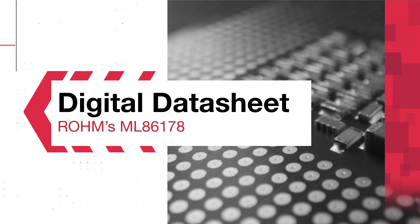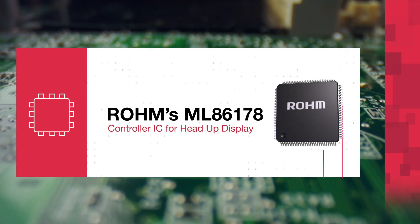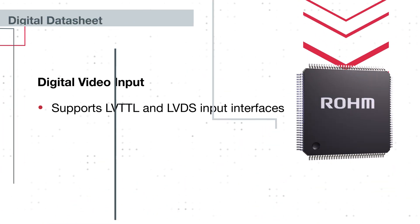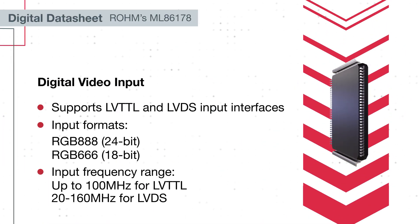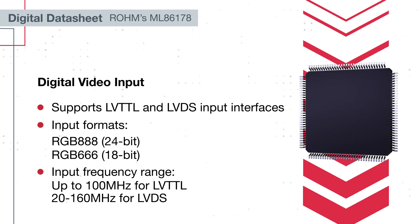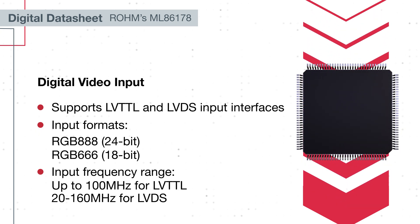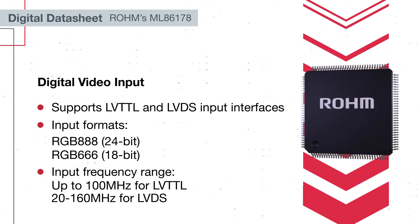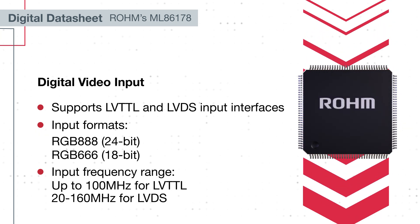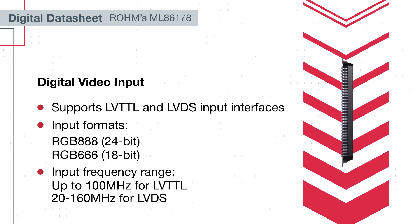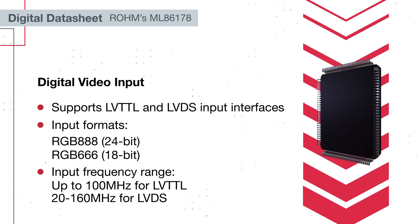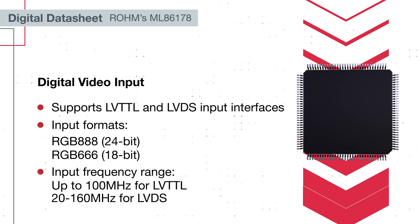Roam's ML86178 controller IC performs image correction for digital video signals. The ML86178 supports both LVTTL and LVDS interfaces for flexible display connectivity. It accommodates RGB888 and RGB666 input formats, operating within a frequency range of up to 160 MHz.